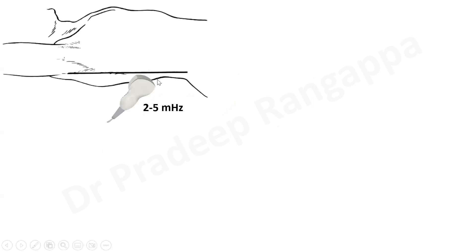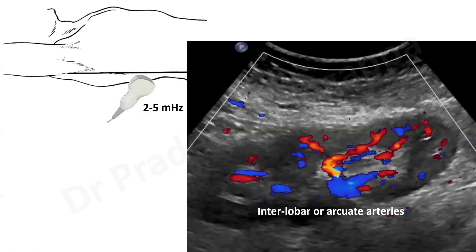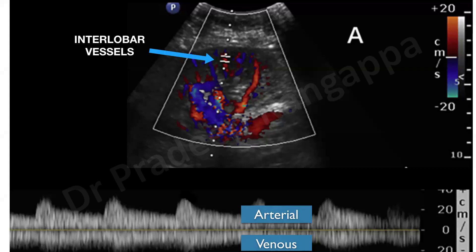For measuring renal resistive index, we lie the patient down and put the ultrasound probe — a curvilinear 2 to 5 megahertz frequency probe — at the posterior axillary line to get a good renal ultrasound image. Then you put a pulse wave Doppler. When you put a pulse wave Doppler, it looks like a speckled appearance. All the red ones are either interlobular arteries or arcuate arteries, and the blue ones will be the veins. You need to insoniate one of the red areas to get an arterial waveform.